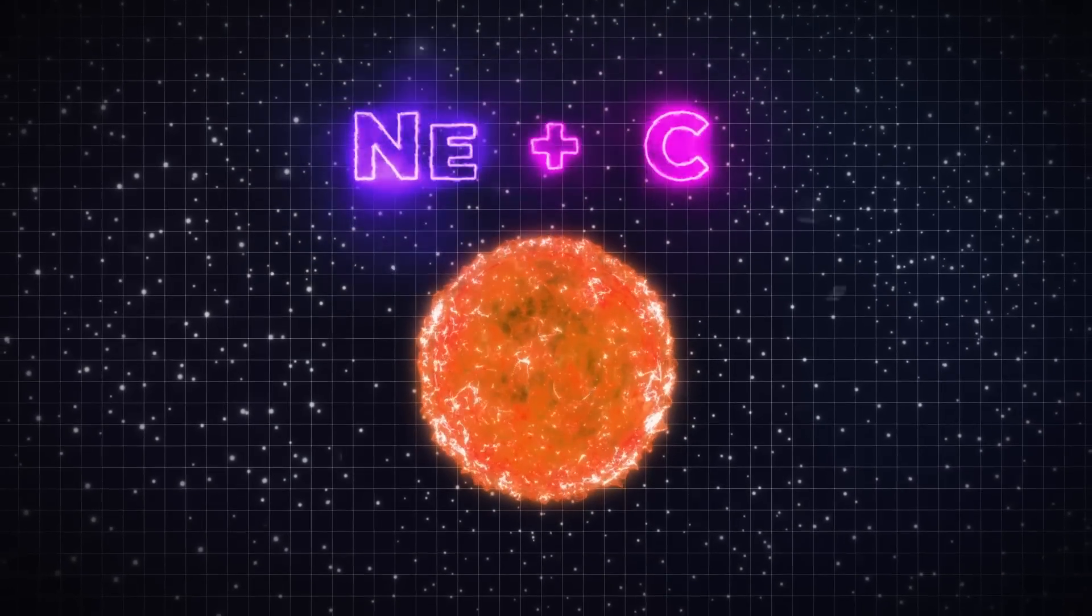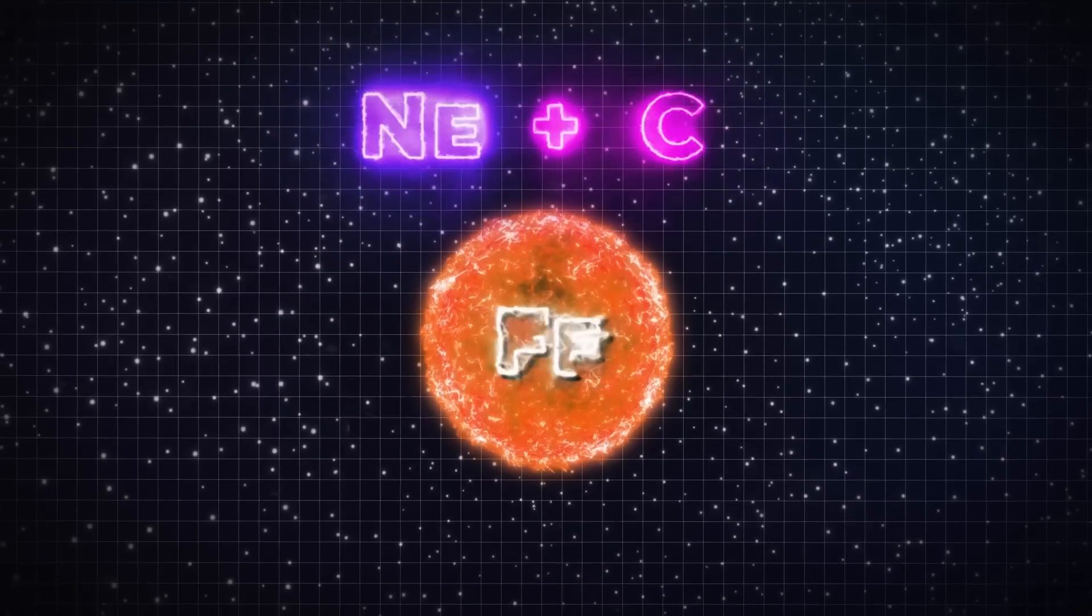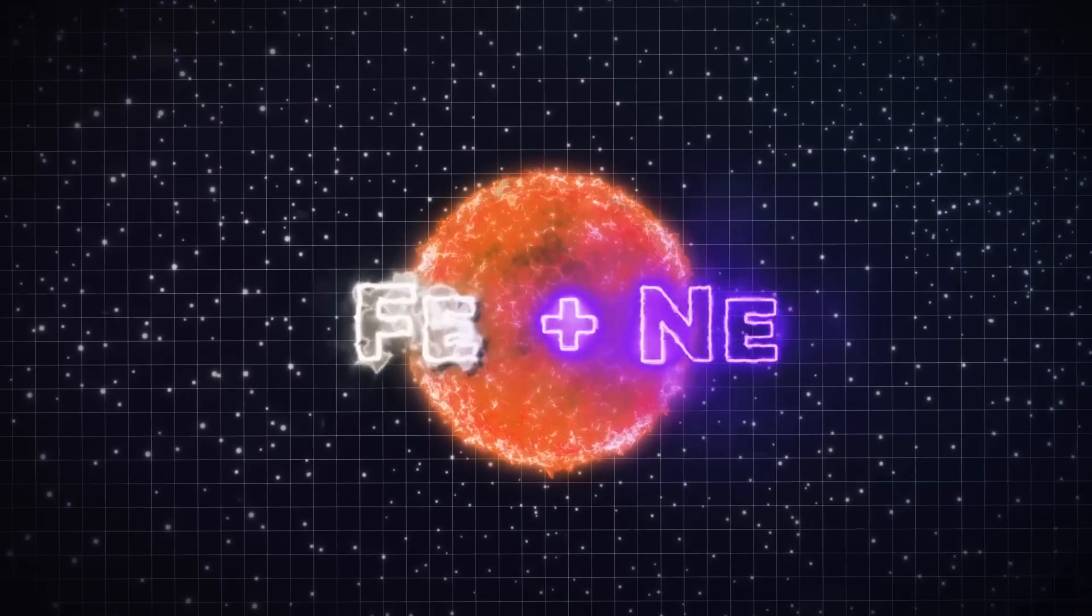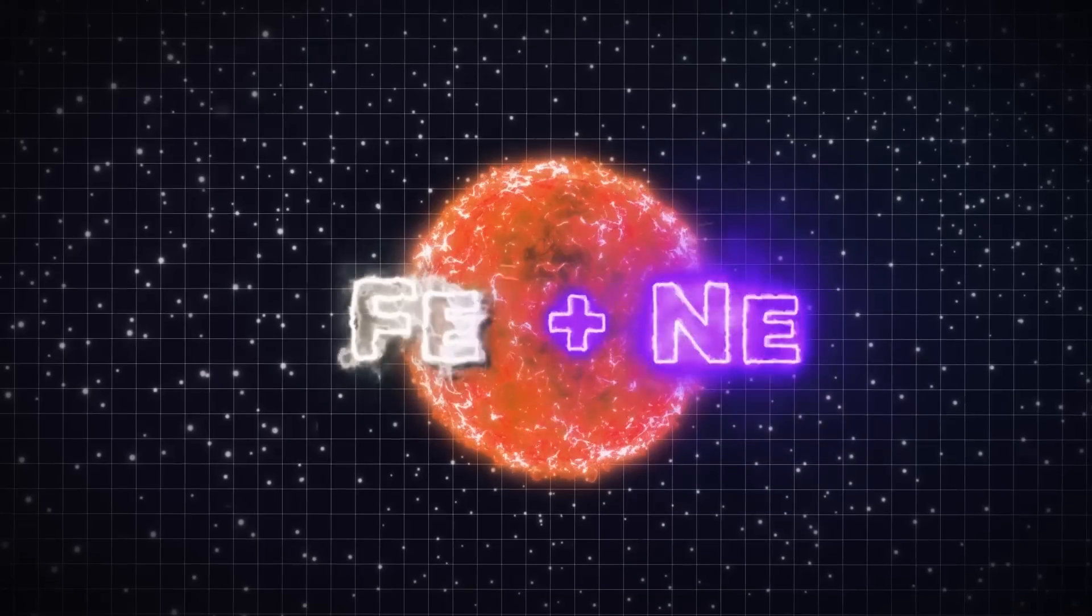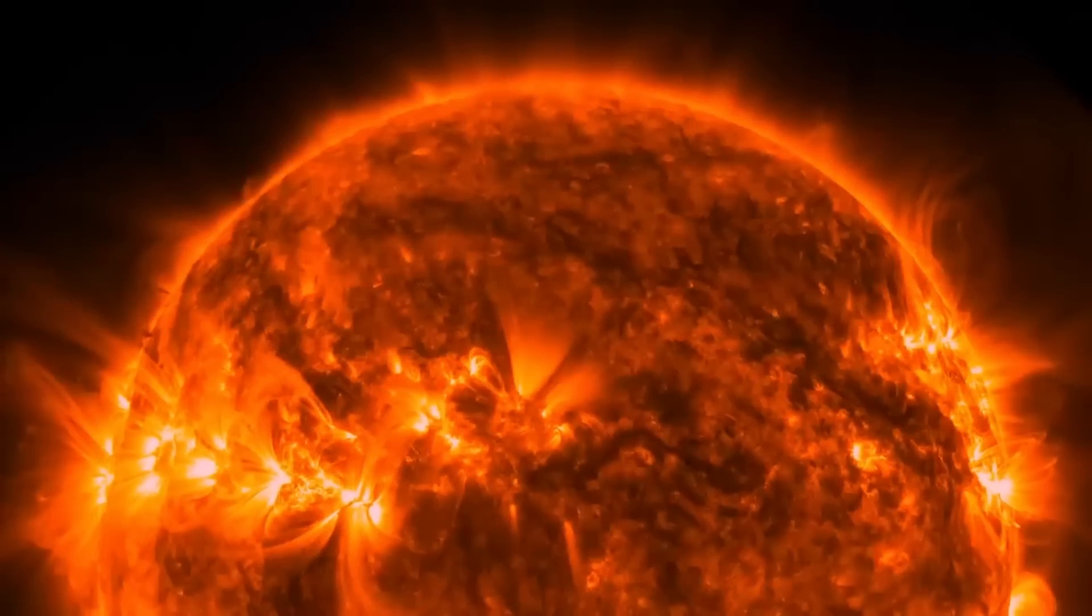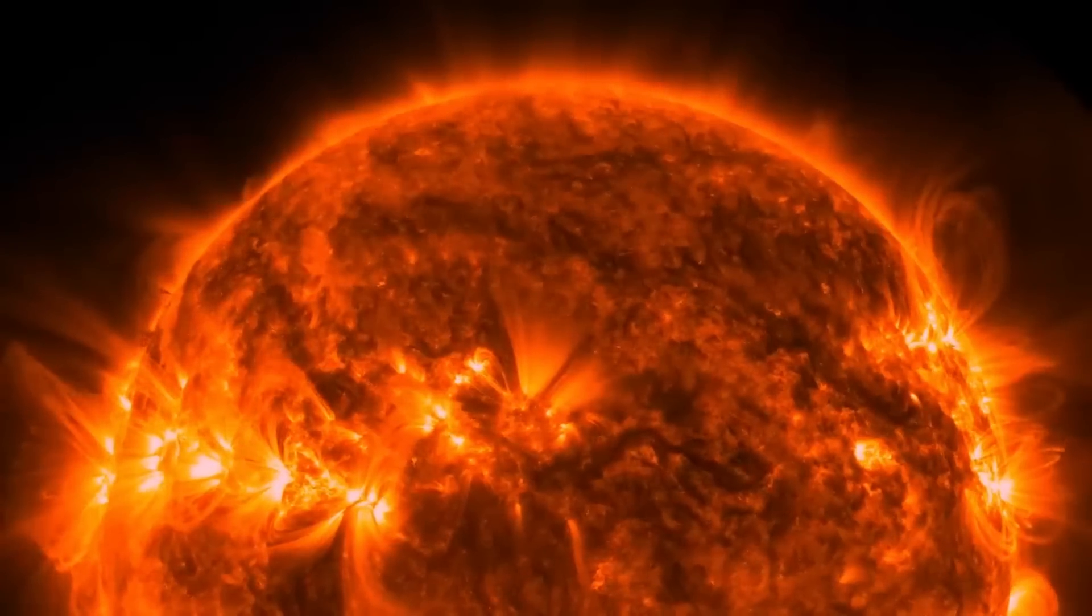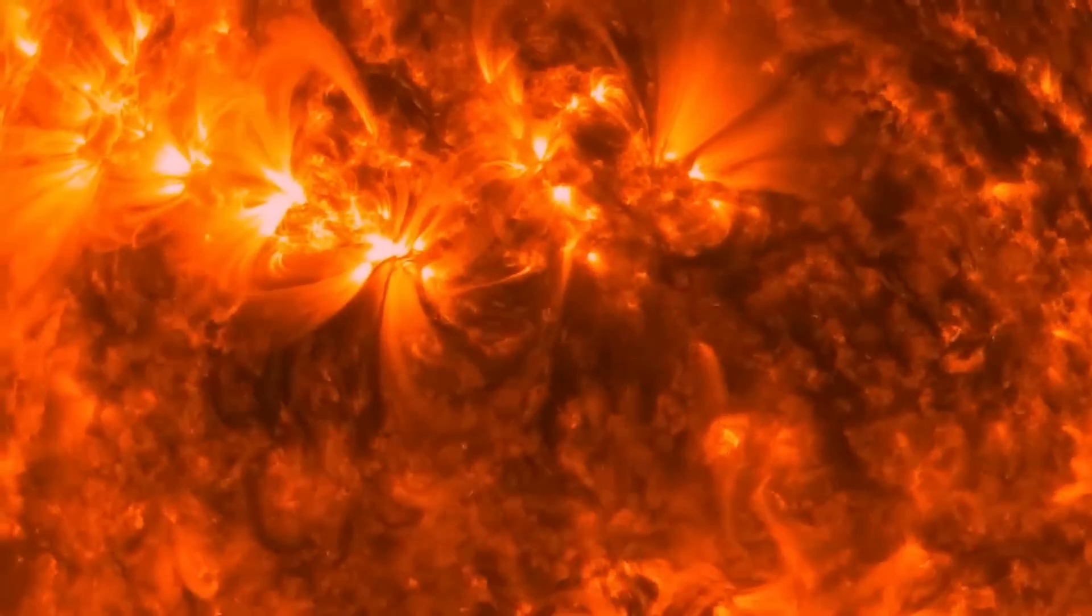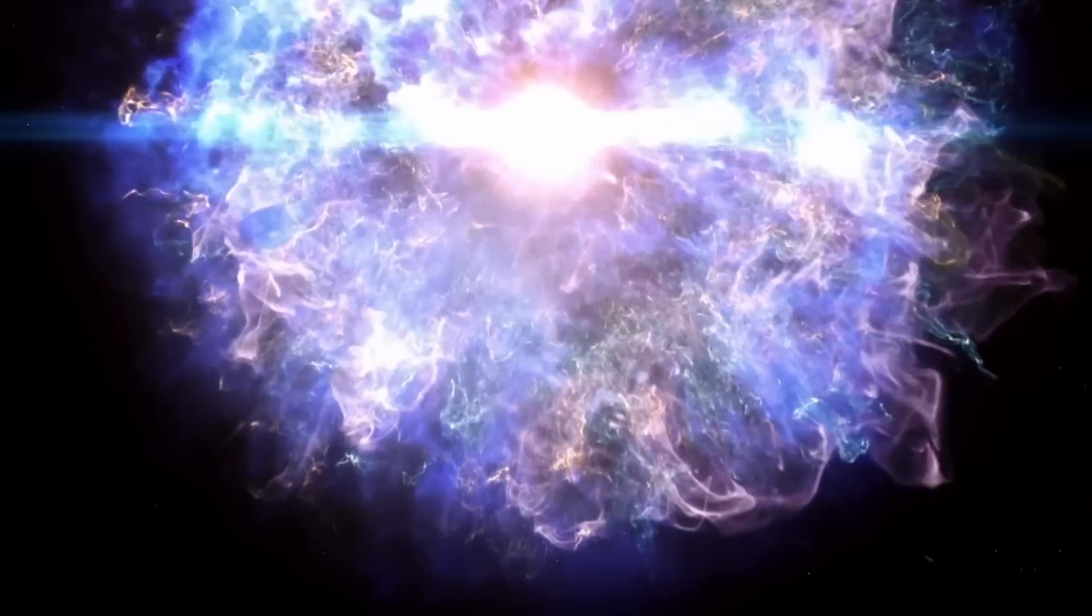After the helium is used up, neon will eventually combine with carbon to form iron. When this happens, the fusion of neon with iron absorbs energy instead of releasing it. Because there is nothing to oppose the star's very powerful gravity, when iron begins to fuse, the star collapses in on itself, giving rise to a supernova explosion.